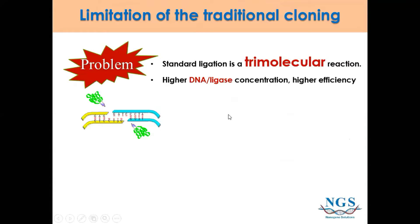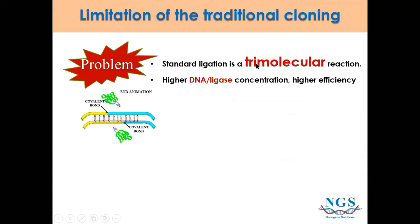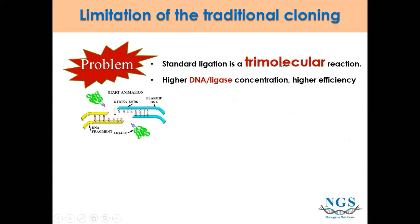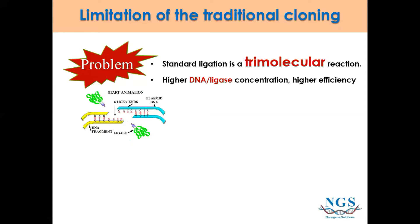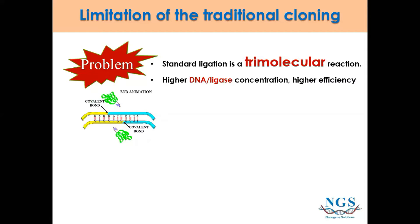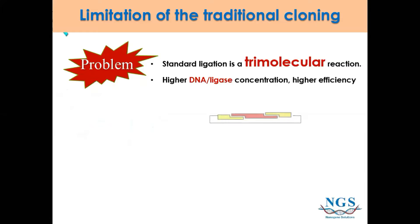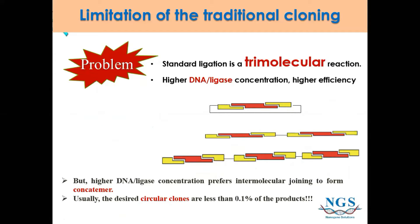Now I will share the limitations of traditional cloning. A standard ligation is a trimolecular reaction, involving three molecules: the gene of interest, the vector, and the T4 DNA ligase. A higher ratio of DNA ligase concentration increases efficiency, but a higher ratio of DNA ligase to insert concentration also favors intermolecular joining to form concatemers. Usually, the desired circular clone represents less than 0.1% of the product.